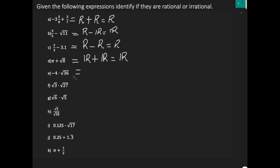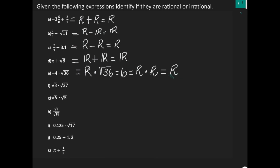Let's look at E. We have negative 4, which is an integer. All integers are rational numbers. And you're multiplying it by the square root of 36. Now, the square root of 36 you can take in your head — the square root of 36 is 6. 6 is an integer, therefore rational. So negative 4 is rational and the square root of 36 is also rational, and when you multiply a rational times a rational, the result is a rational number.